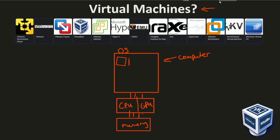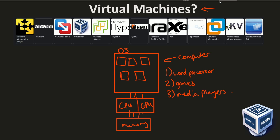A bunch of applications exist on this computer that we like to use — all sorts of things such as a word processor, games, media players, and many more things. Well, you can think of a virtual machine as actually another application that exists on your computer. This application allows you to use computer resources that normally the operating system has direct access to, to create some sort of a virtual computer that can share those resources with your operating system.